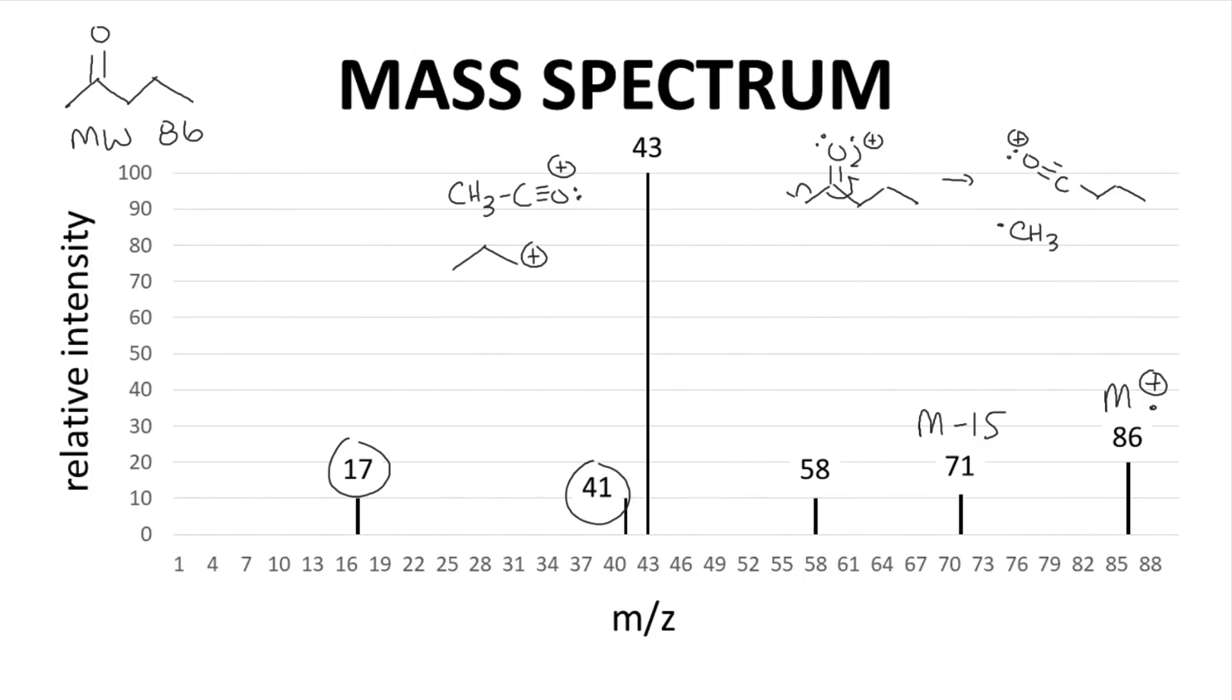The peak at 58, however, is very interesting. Our parent ion is even at 86. Everything else is odd, which is typical. The peak at 58 is even, and it arises from a very special type of fragmentation of the parent ion.